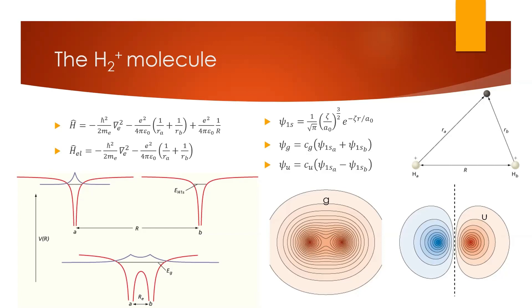Next time we'll apply this in more detail to more types of bonds, looking at more homonuclear diatomic molecules beyond H2+, starting with H2 and then moving on to molecules like N2 and O2.